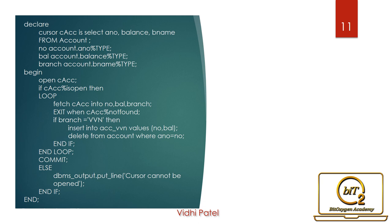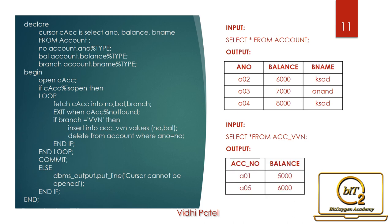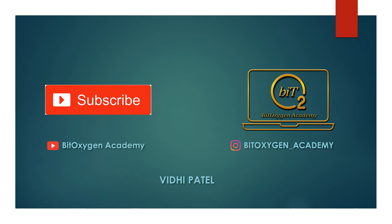In the else part, if the cursor is not open, the message 'cursor cannot be open' is displayed. Checking the account table through SELECT statement — there are no records available having branch name VVN. Now checking the ACC_VVN table — there are 2 records available. This was all about explicit cursor.